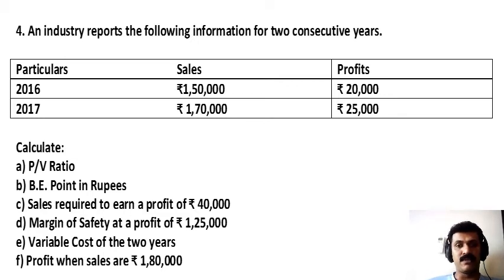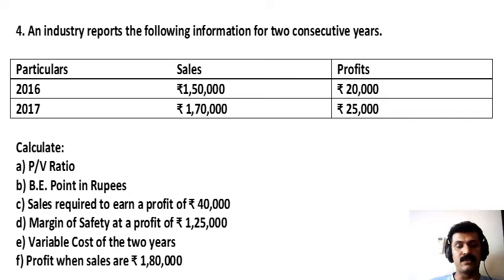From this, you are asked to calculate: PV ratio, breakeven point in rupees, sales required to earn a profit of rupees 40,000, margin of safety at a profit of rupees 1,25,000, variable cost of the two years, and profit when sales are rupees 1,80,000.